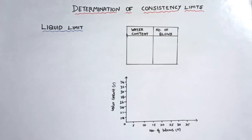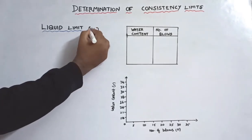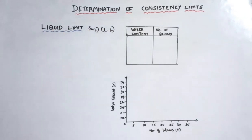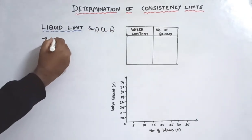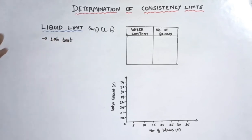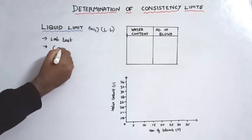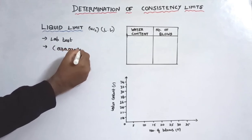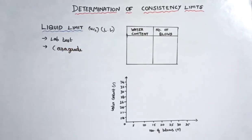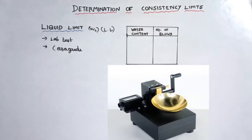First, let's talk about the liquid limit. We will denote the liquid limit and test it in the lab. The name of the equipment is the Casagrande equipment. It has a brass cup. There is a handle — if we rotate it, it gives a blow.